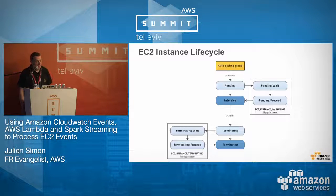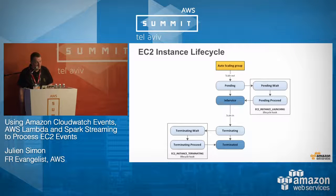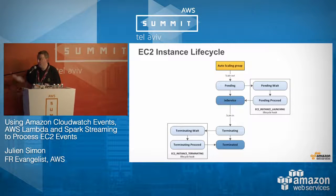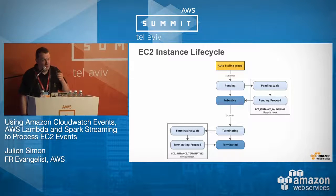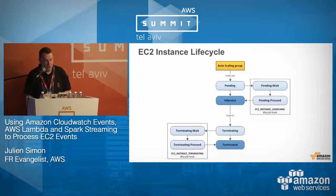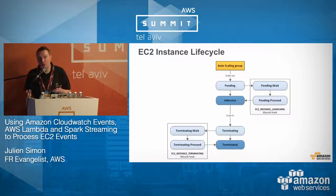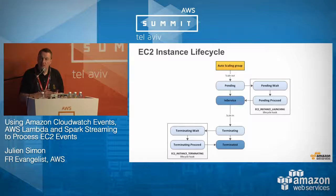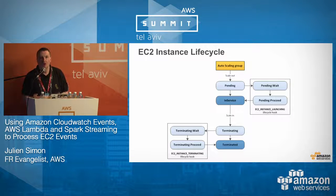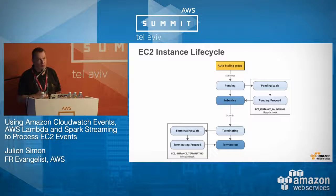This is the normal lifecycle of an EC2 instance. Some states are well known — you see them in the console when you start and stop instances: pending, in service, terminating, terminated. But there are some extra states — pending-wait, pending-proceed, terminating-wait, terminating-proceed — which most of the time are not used. There's a way to insert extra processing between those states, before an instance goes in service or before it actually terminates.